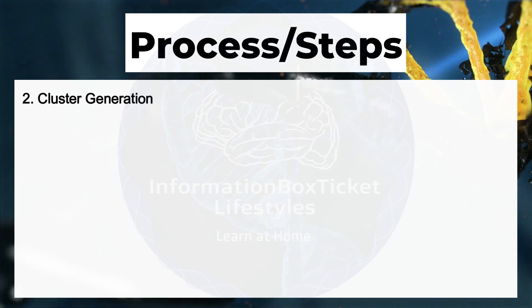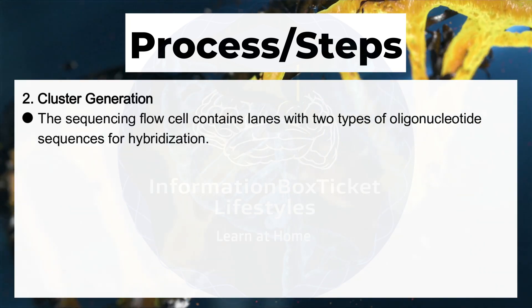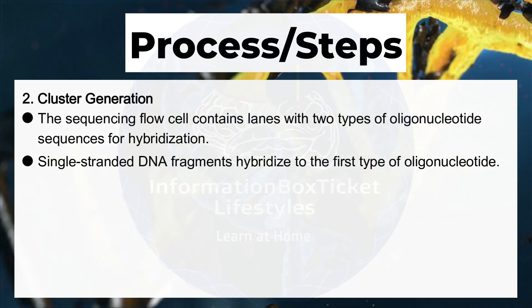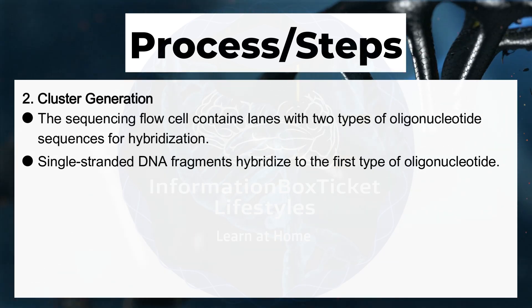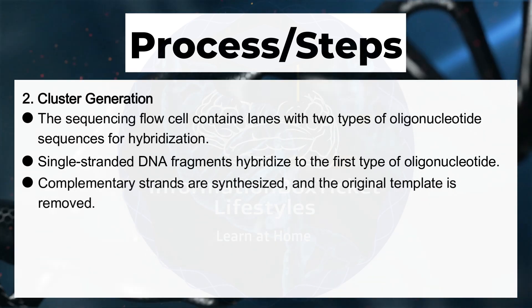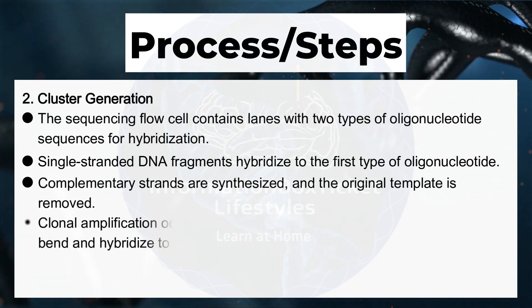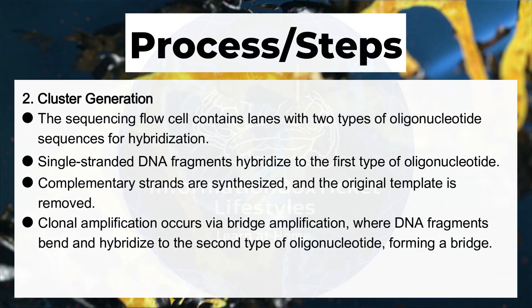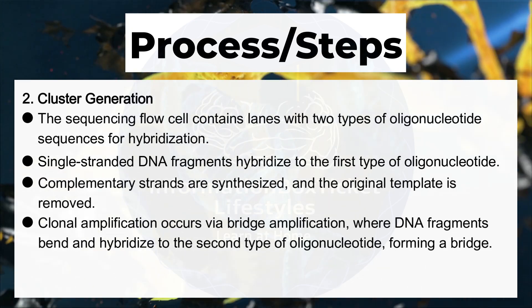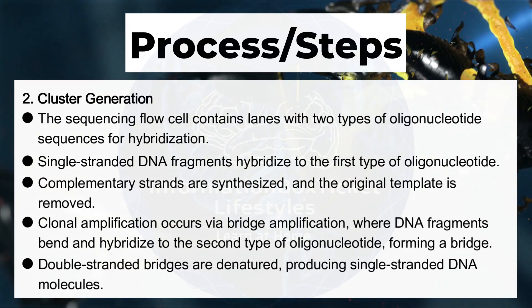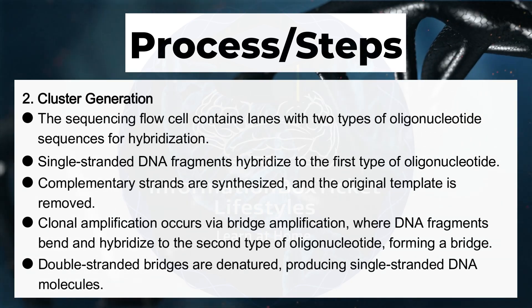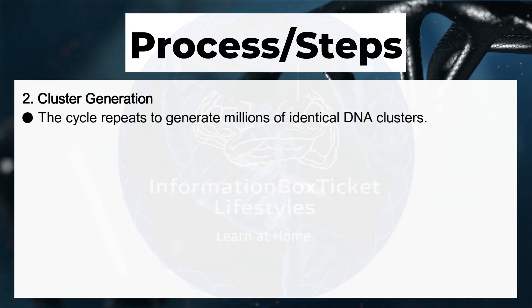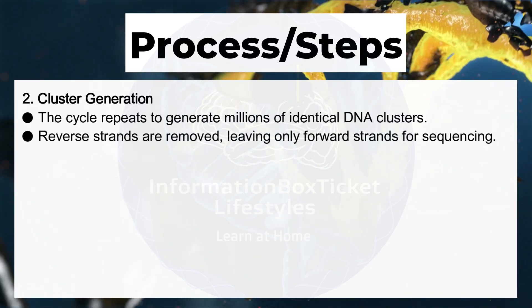Step two: cluster generation. The sequencing flow cell contains lanes with two types of oligonucleotide sequences for hybridization. Single-stranded DNA fragments hybridize to the first type of oligonucleotide, complementary strands are synthesized, and the original template is removed. Clonal amplification occurs via bridge amplification, where DNA fragments bend and hybridize to the second type of oligonucleotide, forming a bridge. Double-stranded bridges are denatured, producing single-stranded DNA molecules. This cycle repeats to generate millions of identical DNA clusters, and reverse strands are removed, leaving only forward strands for sequencing.